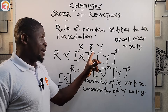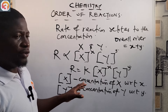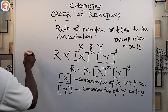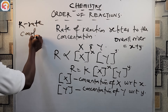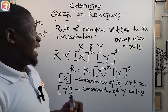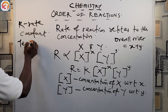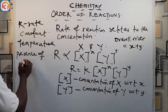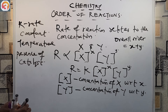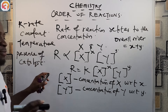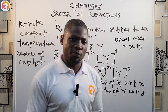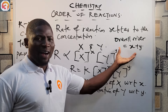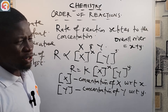The order of the reaction will be the powers of the concentrations of the reactants — the overall order is the sum of those powers, which is x plus y. We introduce the rate constant k here. This k is called the rate constant, and it varies with temperature and the presence of catalysts. Please put that at the back of your mind — it is a typical exam question.